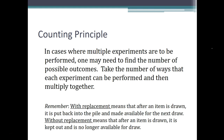Before we dive into doing a Tree Diagram, you need to be familiar with something called the counting principle. When you are in a situation where multiple experiments are being performed and you need to find the number of possible outcomes before you even do the list, you use the counting principle. You take the number of ways that each experiment can turn out and then multiply those together.